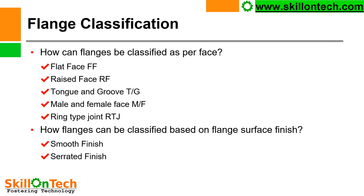How can flanges be classified as per face? Flat face, denoted by FF; raised face, RF; tongue and groove; male and female face; and ring type joint, RTJ.